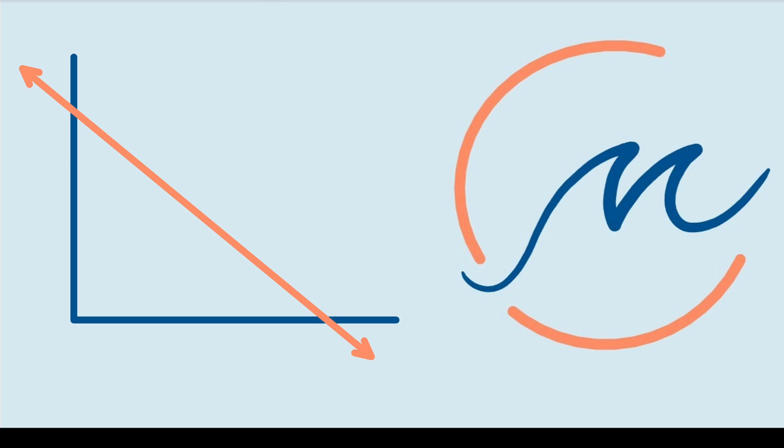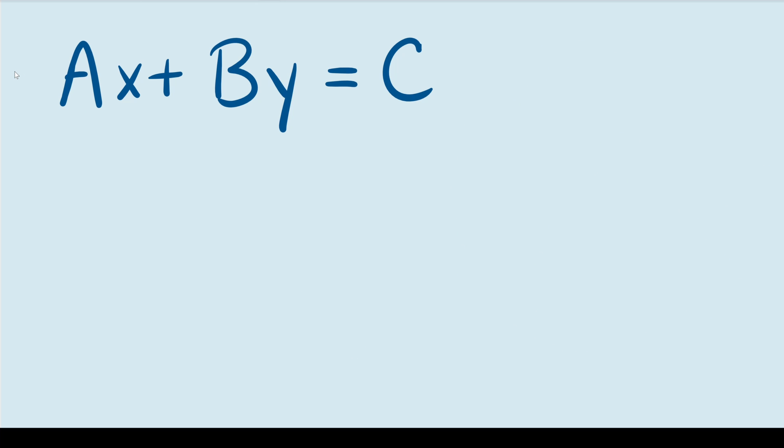In today's video, I'm going to introduce another way to write a linear equation and it's called the standard form. The standard form of a line takes on this format where A, B, and C are integer constants and A in particular is positive.